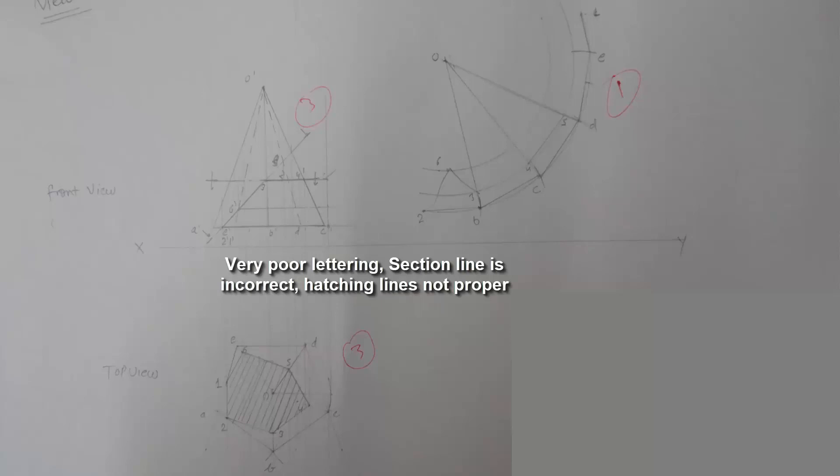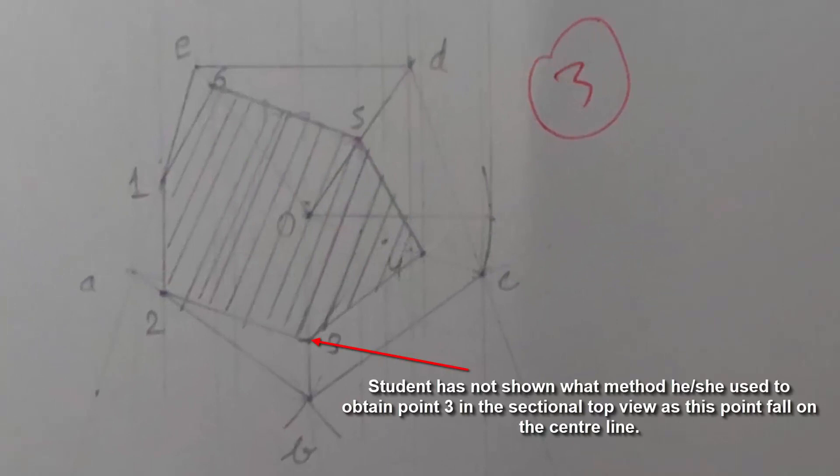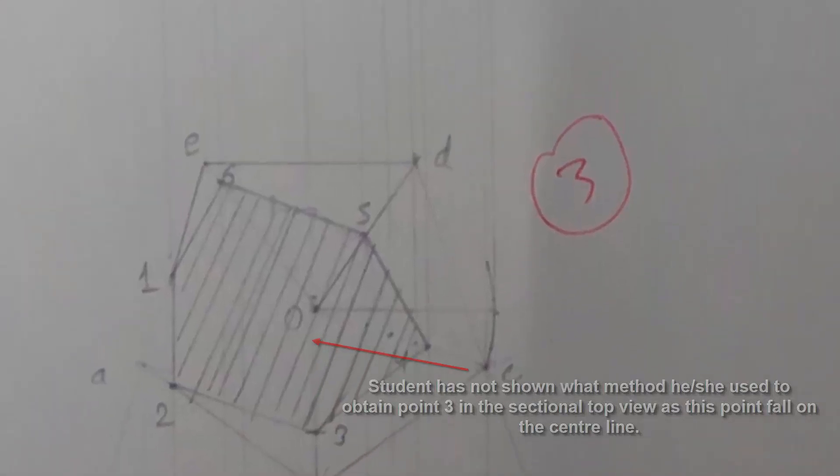Section line is incorrect. Hatching lines not properly done. The student has not shown what method he or she used to obtain point 3 in the sectional top view as this point falls on the central line.